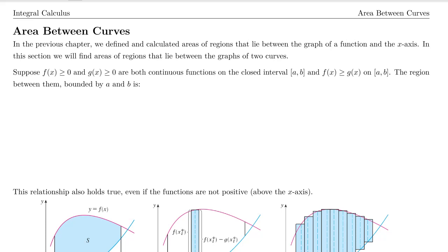Suppose f of x is greater than or equal to 0 and g of x is greater than or equal to 0, and both are continuous functions on the closed interval from a to b, and f of x is greater than or equal to g of x on that interval. The region between them bounded by a and b is given by — before I continue, let me graph what we are describing here.